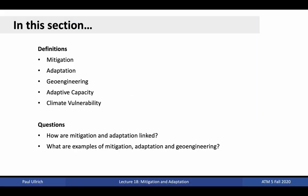In this section, we'll be defining mitigation, adaptation, geoengineering, adaptive capacity, and climate vulnerability. We'll be asking how are mitigation and adaptation linked, and what are examples of mitigation, adaptation, and geoengineering?